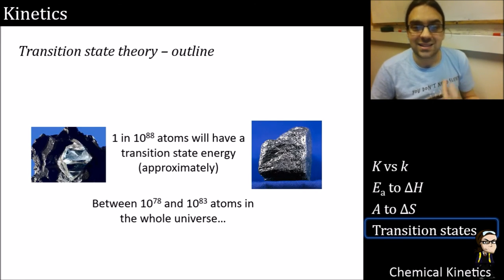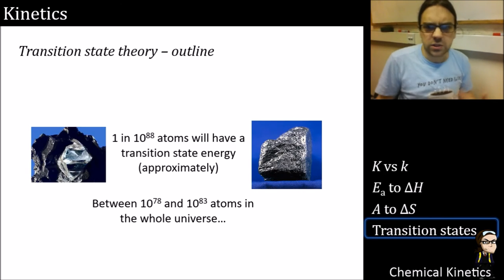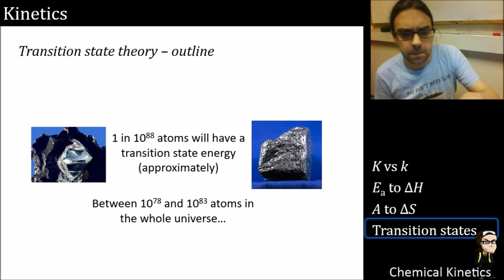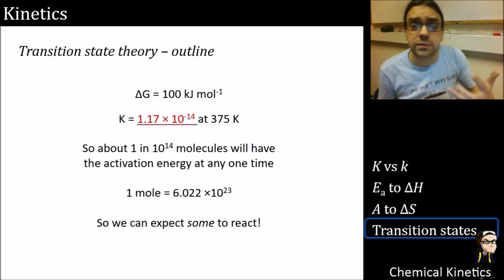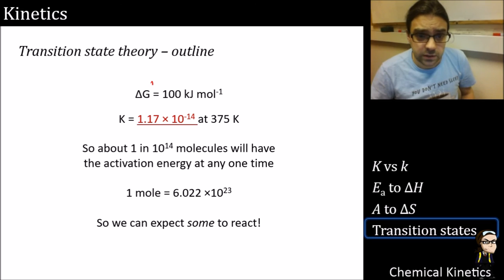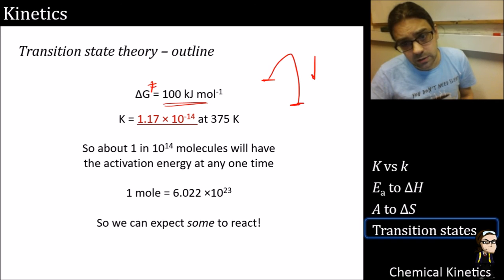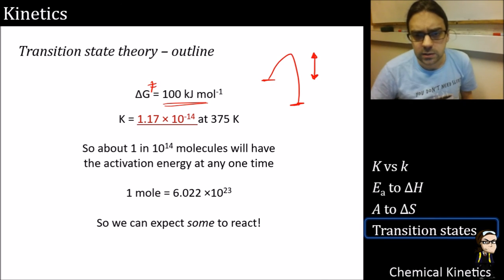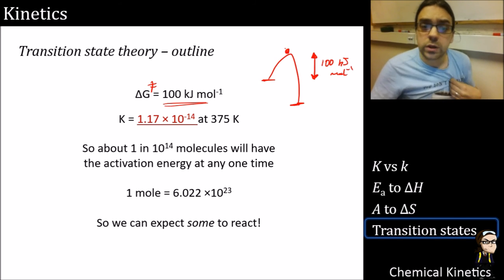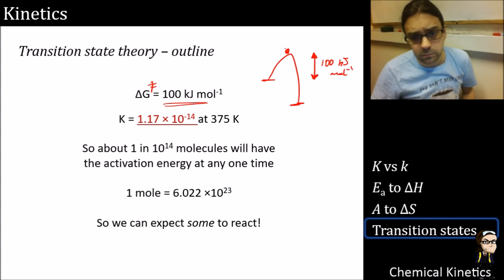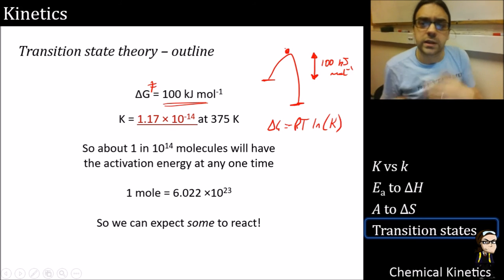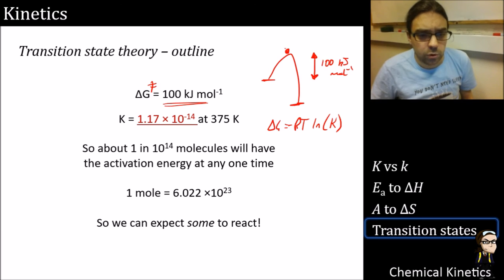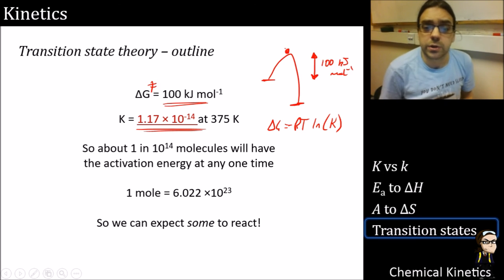You'd have to pump it up to tens of thousands of degrees to make diamond spontaneously change to graphite. Now let's try a different delta G - say an activation delta G of 100 kilojoules per mole, the difference between the reactant ground state and the transition state. Plugging that back into the equation at 375 K gives K equal to 1.17 times 10⁻¹⁴.